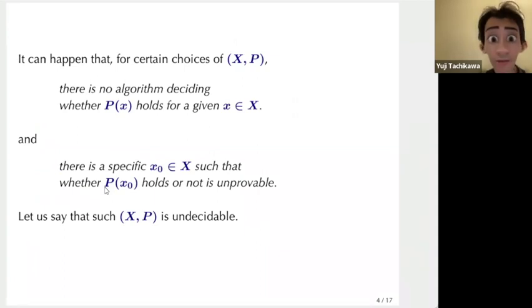It can happen that for certain choices of such class of systems X and the property P, there is no algorithm deciding whether the property P holds for a given X. And also there is a specific X such that whether the system X has property P or not is unprovable. Let us say that such a class of questions is undecidable.